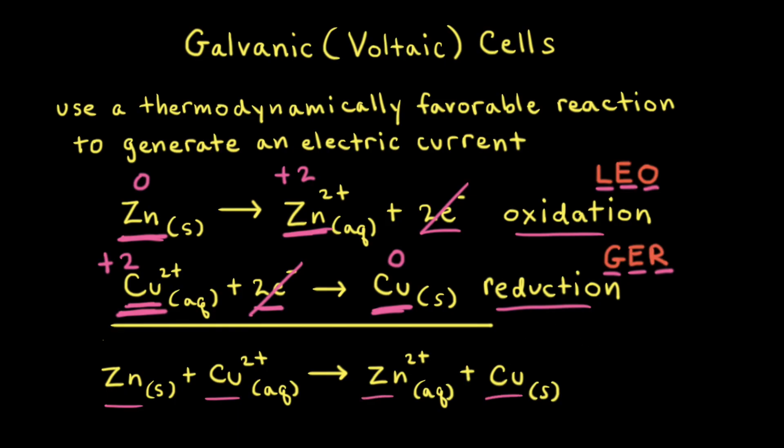In this redox reaction, zinc metal is oxidized to zinc two plus cations, and copper two plus cations are reduced to solid copper. Delta G naught for this reaction at 25 degrees Celsius is less than zero, which means this reaction is thermodynamically favorable.